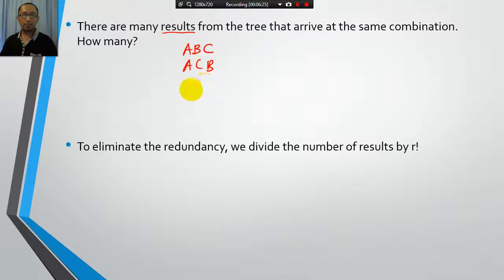So how many different results from the tree will give us the same combination? Well, we have ABC, ACB. How many different ways are there of rearranging 3 letters? There are 6 ways of rearranging 3 letters. So therefore, because there are going to be 6 pathways that arrive to the same combination on the tree, we have to divide our total number of results, 720.